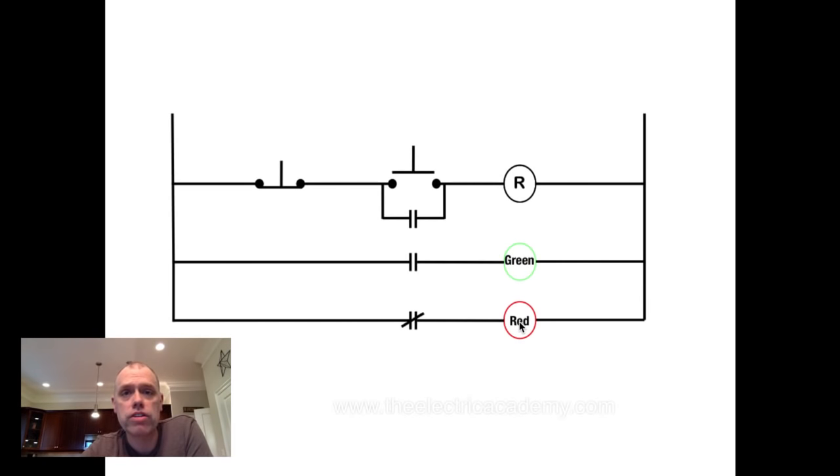And that is as basic a circuit as you can get as far as a relay is concerned. Motor control circuits work the same way, except the only difference is you've got a coil, an M coil we call it, but you also have a set of overloads.